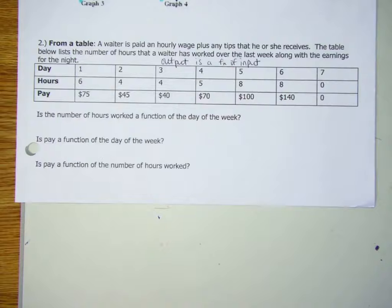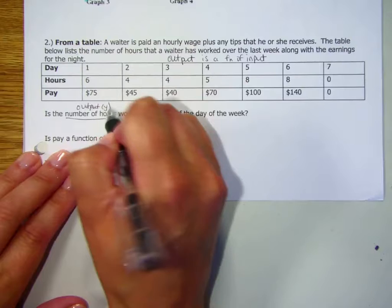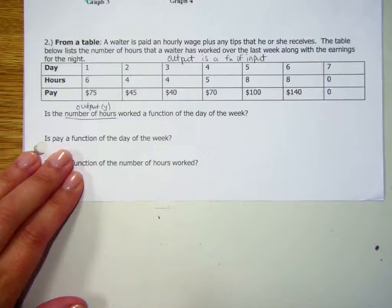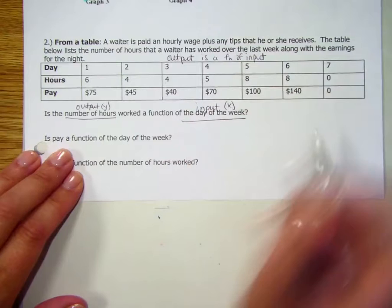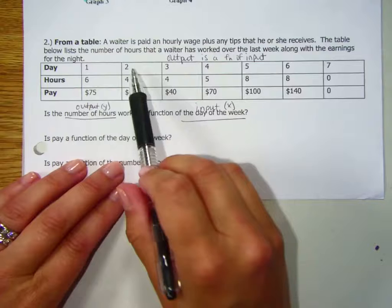The first thing that we have to figure out is what's the input and what's the output in this question? Which is why I want you to keep that phrase: Output is a function of the input. So the number of hours, that's our output, that's kind of like our y. Is that a function of the day of the week, the input, which is x?